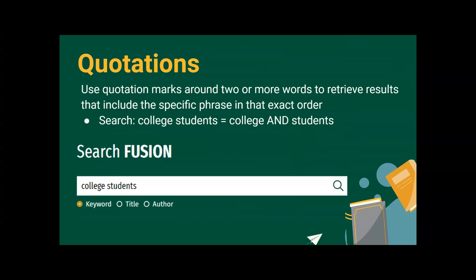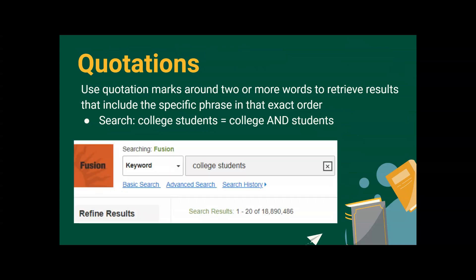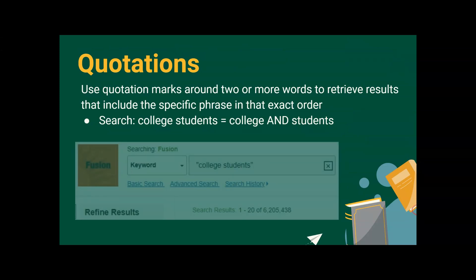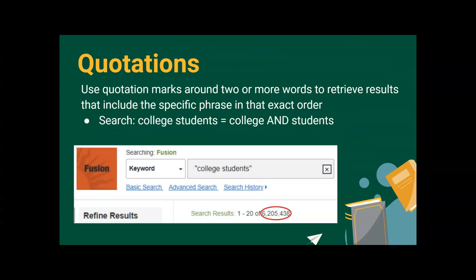Using quotation marks in a search allows you to search for the exact words in a phrase. For example, you think you're searching for college students, but you are actually searching for college AND students. Using quotation marks will make sure all results have those words appearing as you typed them. This is a good way to narrow your search, as it will decrease the amount of results you find.